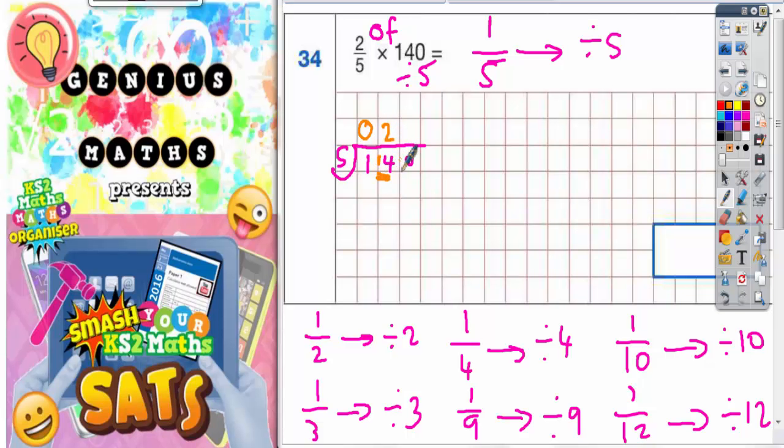two times five is ten, there's four left over, so carry the four to the next column. That now makes forty. Five into forty goes eight times. So one-fifth, if we're dividing 140 by five, is twenty-eight. So one-fifth equals twenty-eight,